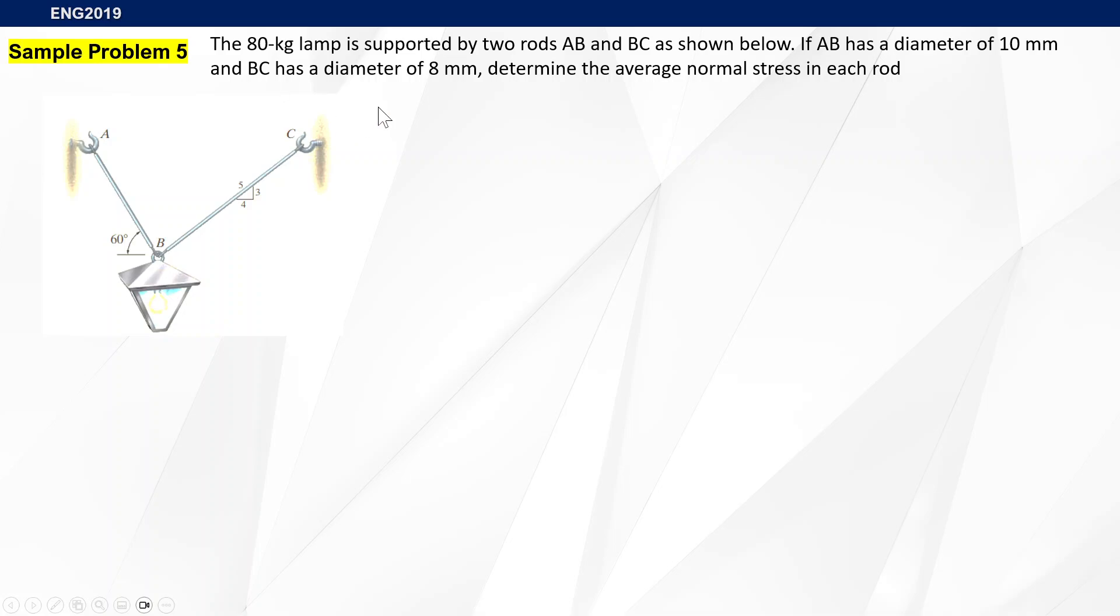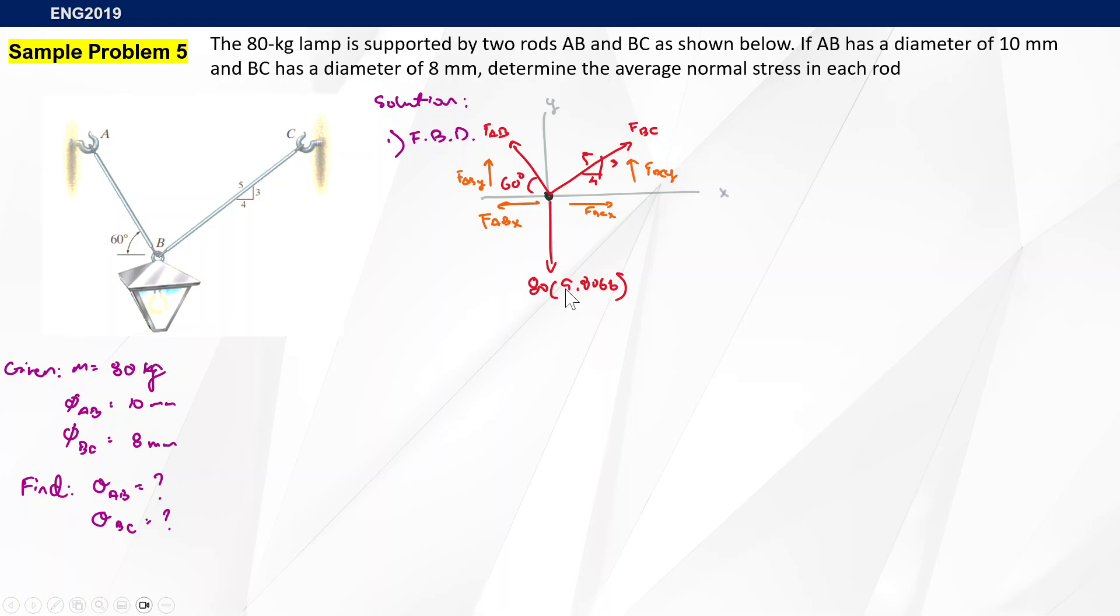The next step is to establish first our free body diagram to find our internal loads. Here's our XY axes, we have the weight 80 kilograms times 9.8066, we have force FBC and force FAB at 60 degrees. From here we can now establish our equations of equilibrium by finding the load. We can get the summation of forces on the X and Y axes.